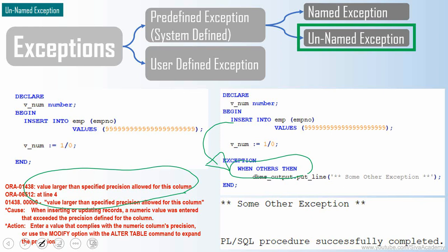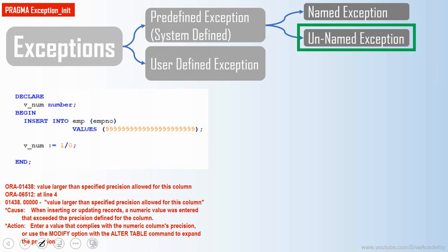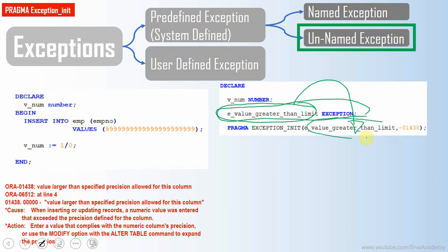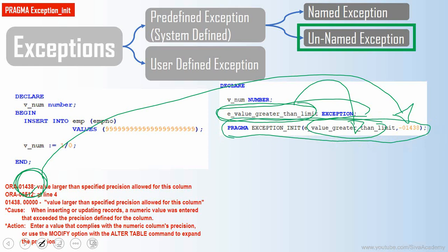From an interview point of view, you have to highlight that you can associate a name to an unnamed exception. To do this, first define a variable of exception type — this will be the name. Then use PRAGMA EXCEPTION_INIT to associate that name with the error number. In this case, I am associating the name with error number ORA-01438. This basically associates a name to a particular unnamed exception.